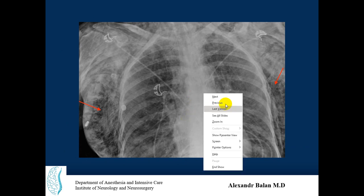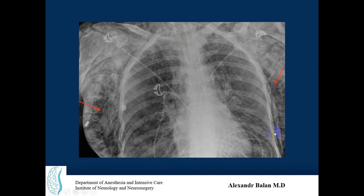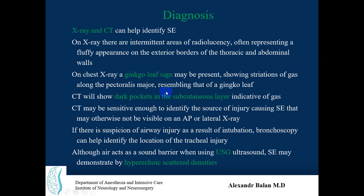Here you can see a great image of emphysema. Normally the lungs are visible, but the black color signifies air — and you can see air of black color around and above the thorax as well. For diagnosis of subcutaneous emphysema, the two most frequent imaging methods are X-ray and CT scan of the chest. On X-rays, there are intermittent areas of radiolucency, often representing a fluffy appearance at the exterior borders of the thoracic and abdominal walls.